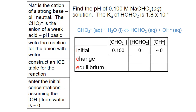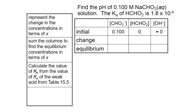We can construct an ICE table for this reaction and fill in our initial concentrations. The formate ion from sodium formate is 0.100 mol/L. The initial concentration of formic acid will be 0, and we'll assume that the hydroxide ion concentration from the autoionization of water is very small, so the initial hydroxide ion concentration will be approximately 0 as well. Next, we fill in the change row in terms of X — subtracting from the reactants and adding to the products. We sum the initial and change rows to get equilibrium concentrations: 0.100 − X for the formate ion, and X for formic acid and hydroxide ion.